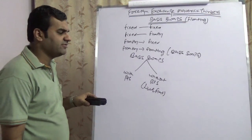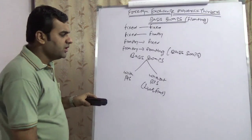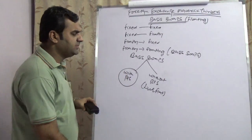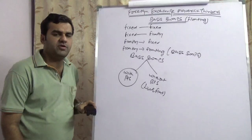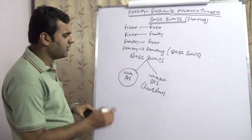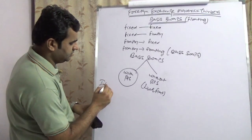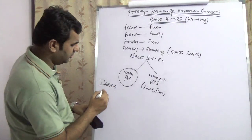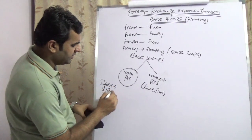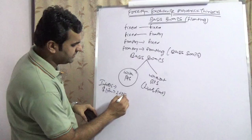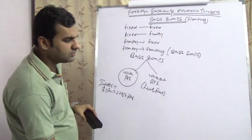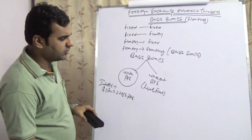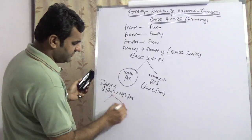We'll cover the live of fiat in the next video. In this video we're going to cover what a basis swap with a basis point means. We'll take a simple example: assume you have a company which is Infosys, and Infosys is taking a dollar loan of 1 billion dollars at LIBOR plus 250 basis points.